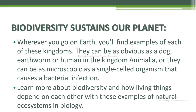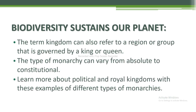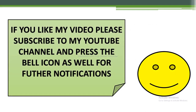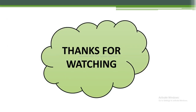Now the topic is biodiversity sustains our planet. Wherever you go on earth, you will find examples of each of these kingdoms — as obvious as a dog, earthworm, or human in kingdom Animalia, or as microscopic as a single-celled organism causing a bacterial infection. Learn more about biodiversity and how living things depend on each other through examples of natural ecosystems in biology. If you liked my video, please subscribe to my YouTube channel and press the bell icon for further notifications. Thanks for watching.